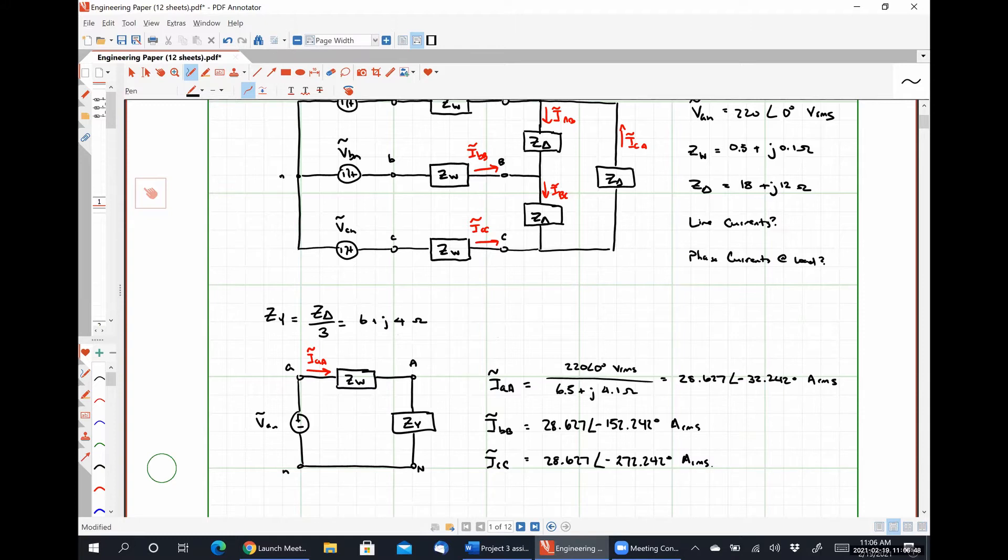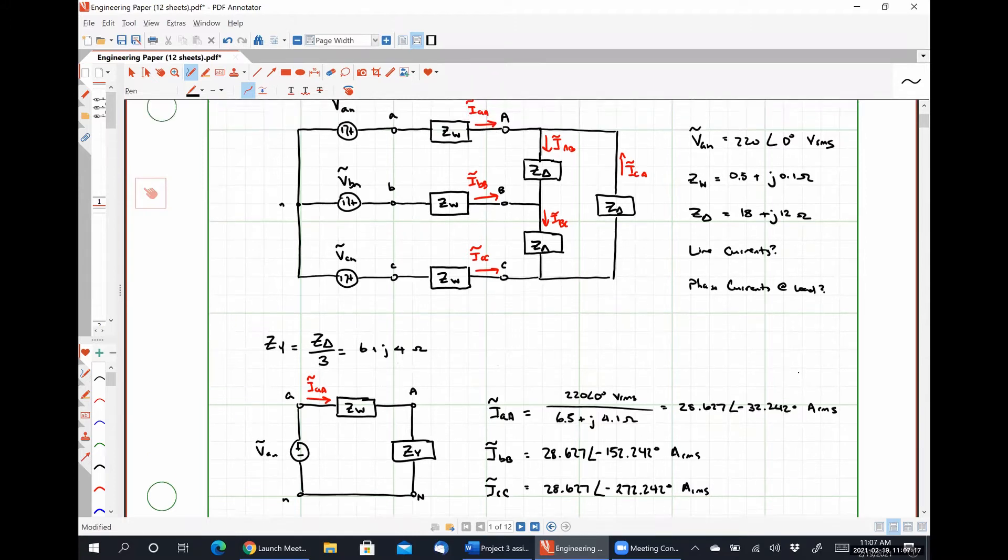So the easier part is over. Our single phase equivalent circuit allowed us to calculate our line current extremely trivially, right? Just by doing a simple transformation from delta to Y on that load, our line current circuit analysis is very, very trivial.